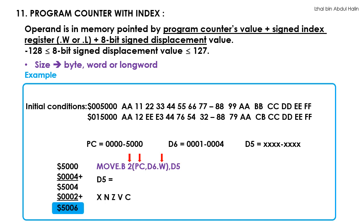Since the operand's size is a byte, the value 66 from address 5006 is moved into the destination register D5. Note that 66 in binary is non-negative since its MSB is 0 and 66 is clearly non-zero. Thus, the N and Z flag of the status register are both zero.